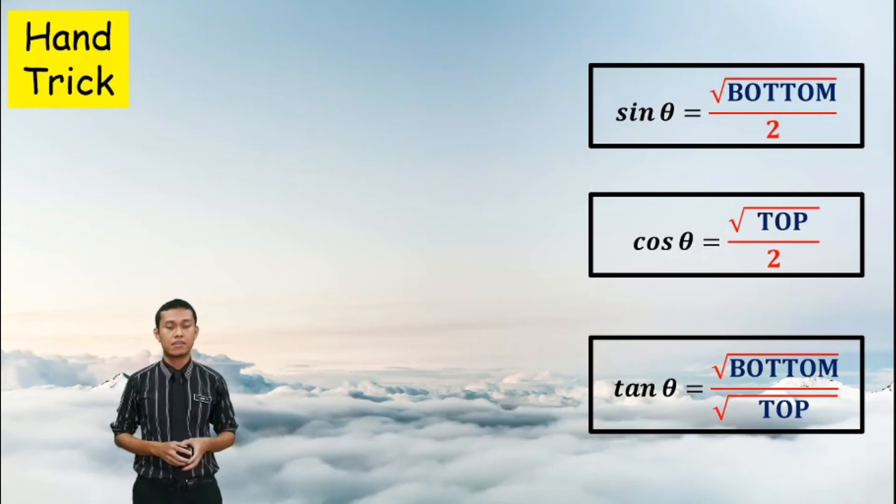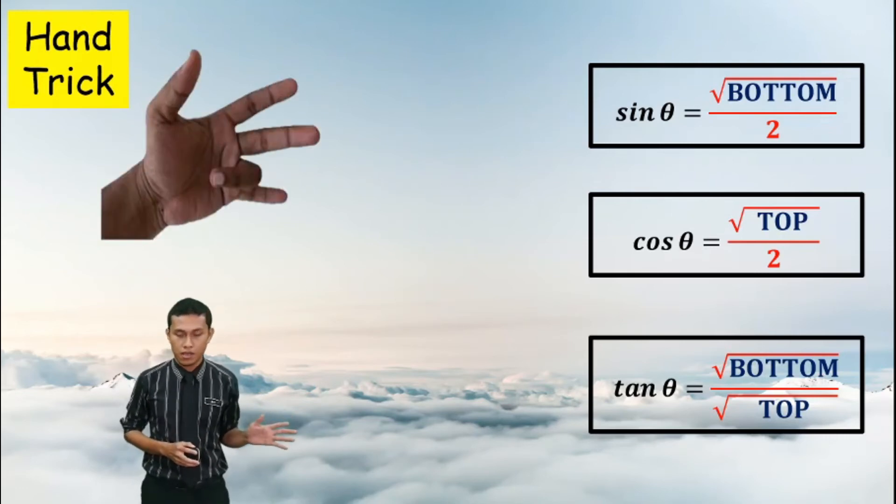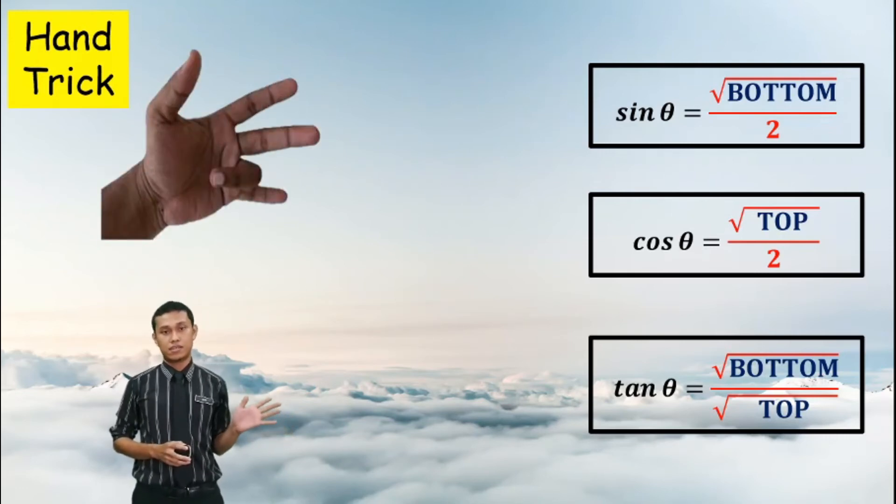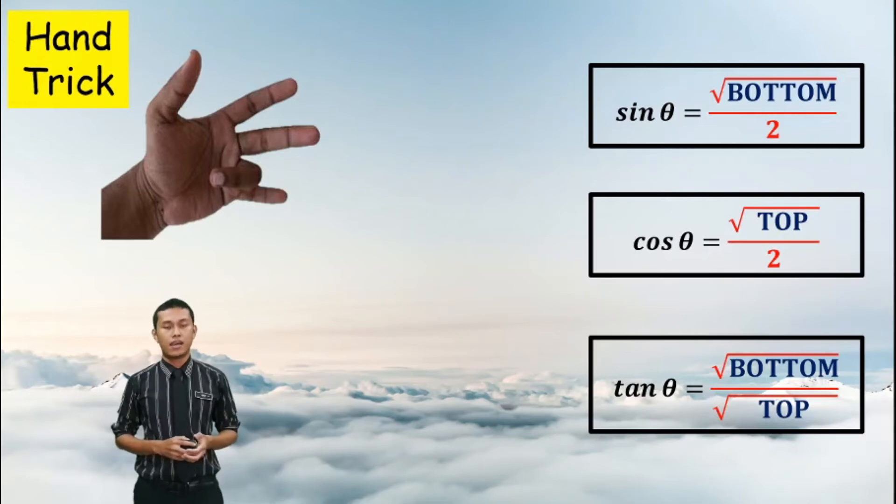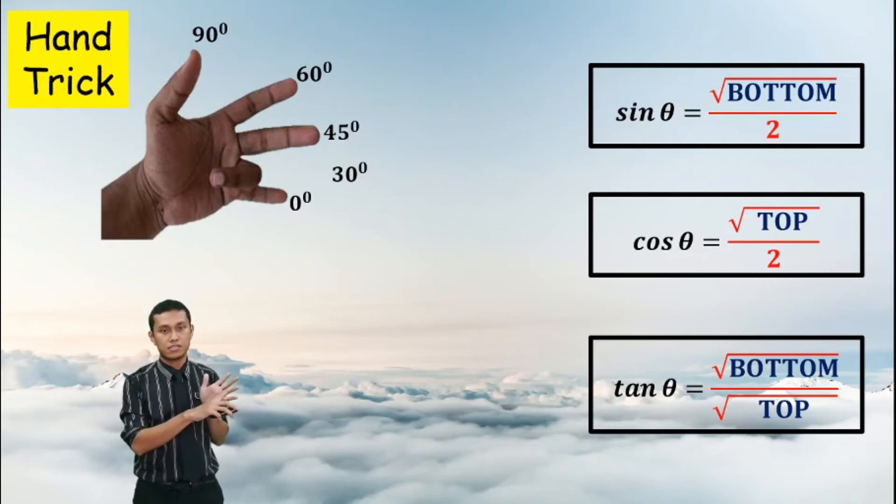So we have sine, cos and tangent. But in this case, we are looking at the formula for cos theta. But another thing that you need to know is the value, each finger represents different value. So we start from the lowest finger, little finger here. It represents 0 degree and then next, 30 degree, 45 degree, 60 degree and also 90 degree.